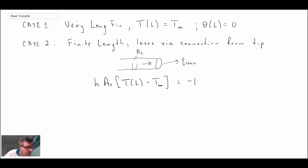It will be the temperature at the end of the fin minus the fluid temperature that the fin is exposed to. Then on the right-hand side, we'll put Fourier's law, applied right at the end of the fin tip. So that is going to be -k·AC·dT/dx evaluated at x equals L. Essentially it's equating the slope, because that cross-sectional area is going to cancel out. So that's finite length—we lose via convection at the tip.